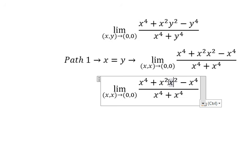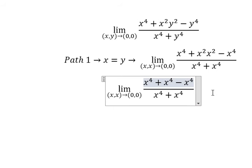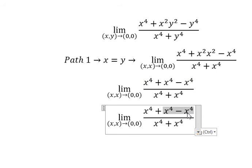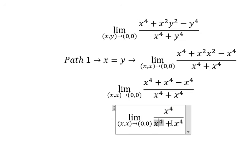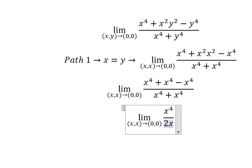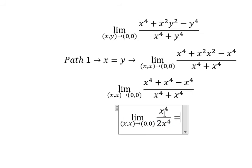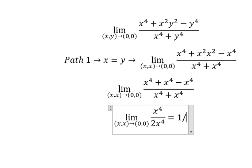So this one we have x to the power of 4. This one we cancel. This one we have x to the power of 4. Now we simplify x to the power of 4 on numerator and denominator. And we have one over two.